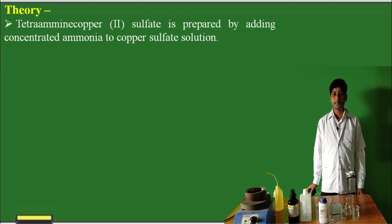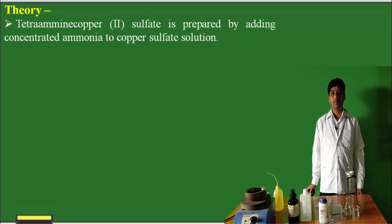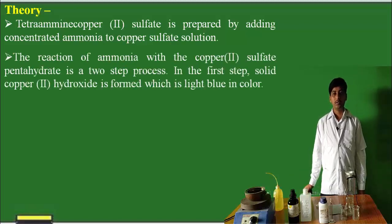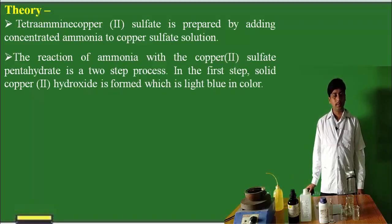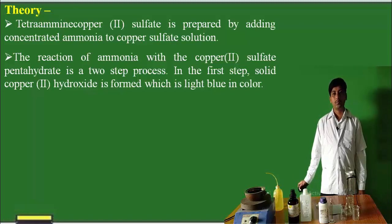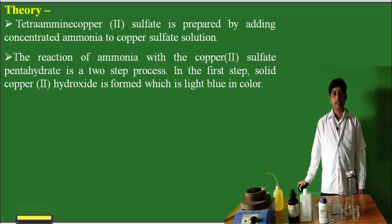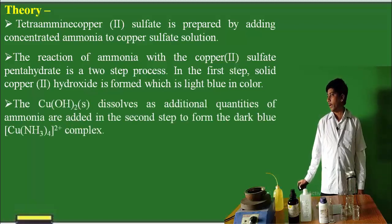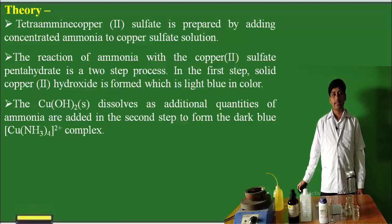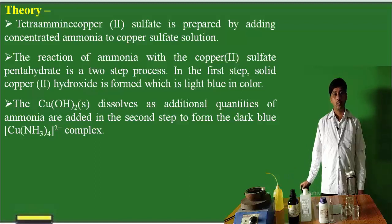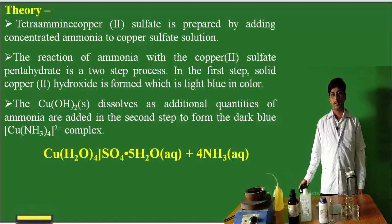Now we will see the theory. Tetramine copper sulphate is prepared by adding concentrated ammonia to the copper sulphate solution. The reaction occurs in two steps. In the first step, the ammonia reacts with copper sulphate solution to form a pale blue coloured compound, copper hydroxide. And in the next step, when we add excess of ammonia, this copper hydroxide is converted into a dark blue coloured solution — that is, the tetramine copper sulphate complex.